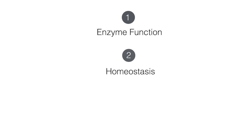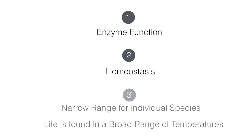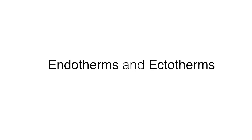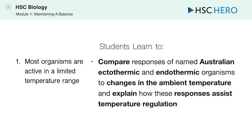Hey everyone! In the earlier video tutorials, we looked at enzyme function and homeostasis. We learnt that although life exists in a narrow range for individual species, all of life is found over a broad range of temperatures. Today, we're going to do something a little different by looking at different types of organisms grouped as endotherms and ectotherms and how they respond to changes in temperature. You'll have to compare responses of named Australian ectothermic and endothermic organisms to changes in the ambient temperature and explain how these responses assist temperature regulation.